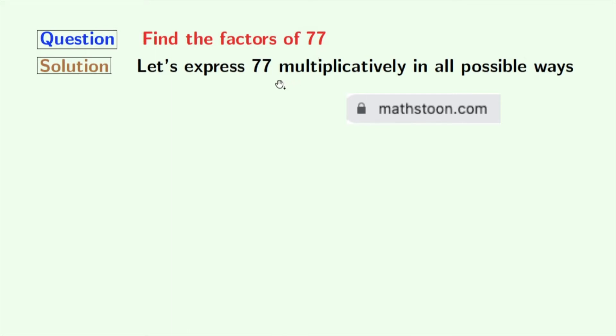At first, we will find all the possible ways in which we can express 77 multiplicatively. See that we can write 77 as 1 times 77.